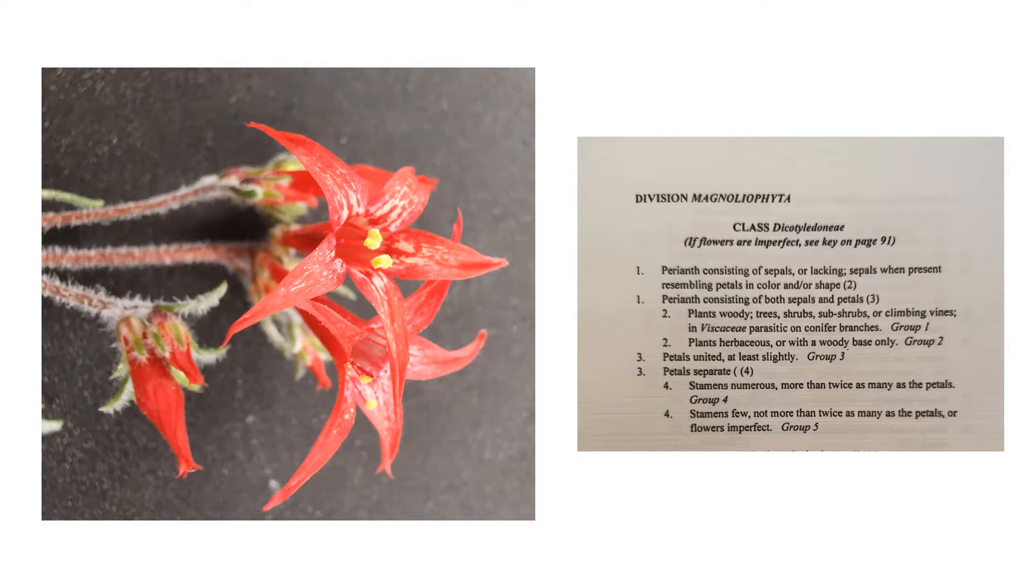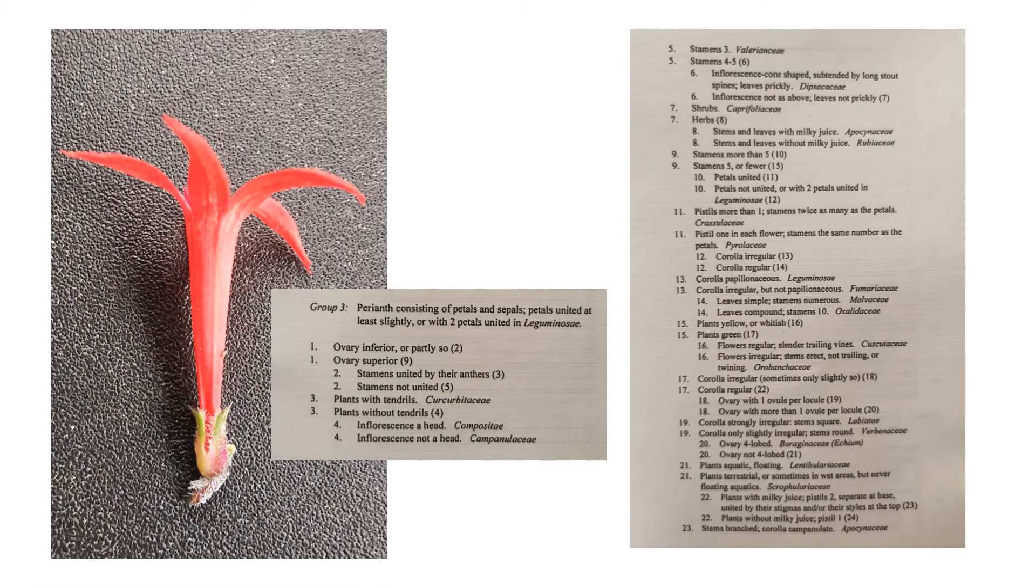Okay. Our second flower is actually one of my favorites and it's enjoyable to keep. So it's in Magnolia as well. And we see that the perianth isn't only sepals. It's not lacking sepals and the sepals are present and they don't resemble this. So we're going to move on and perianth consisting of both sepals and petals. So we've got sepals and we've got petals. So we're going to move to three and petals united at least slightly. And you can see here that these petals are united. And so we're going to move on to group three.